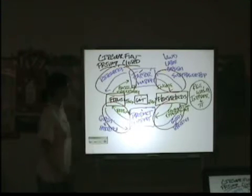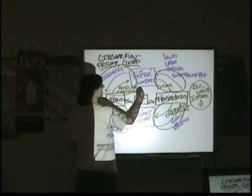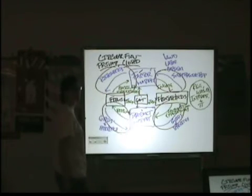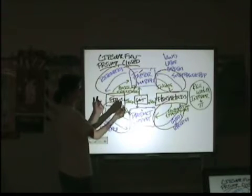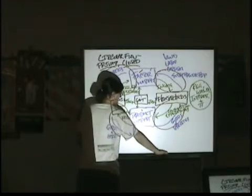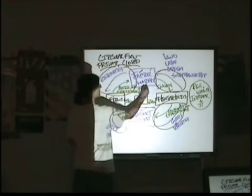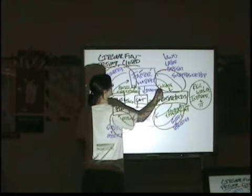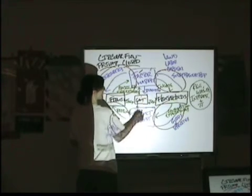We also have money going from the government because the government is going to buy resources and the government is going to buy products. So we also have an exchange happening between the government and each of these other things. So we have resources and government spending.